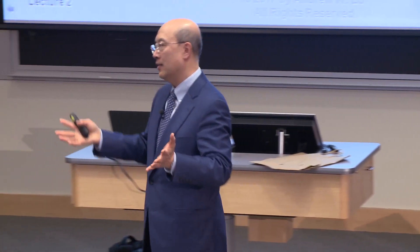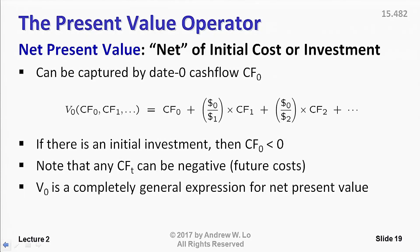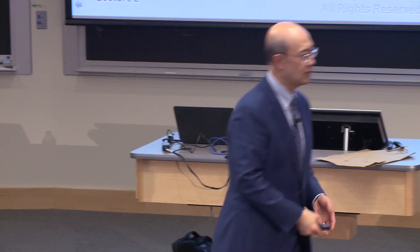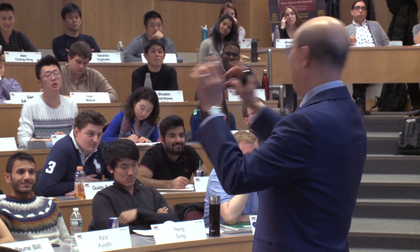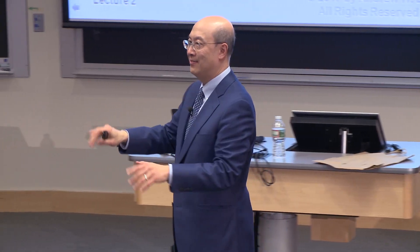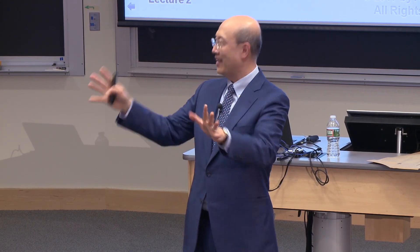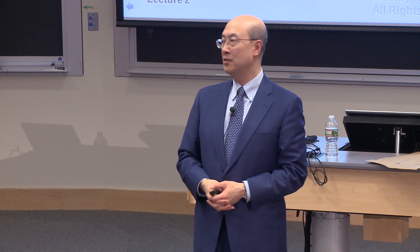That's pretty much it. That's the lesson of time value relations and net present value: use a common currency. Once you've got the cash flows and these exchange rates, you can calculate the value of any sequence of cash flows. And here's the deep financial advice: negative cash flows, don't take them. Positive cash flows, take them. And if it's really positive, take a lot of that. Once you denominate everything in a common currency, decisions become really simple.